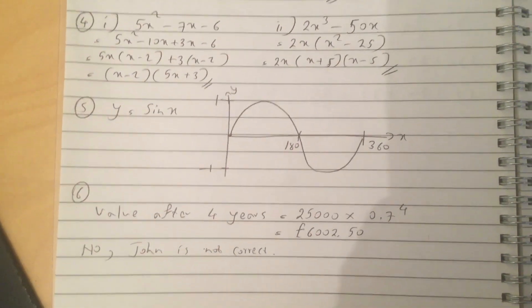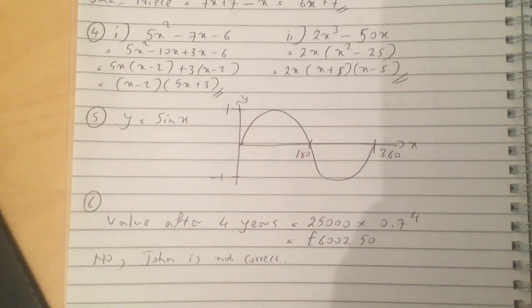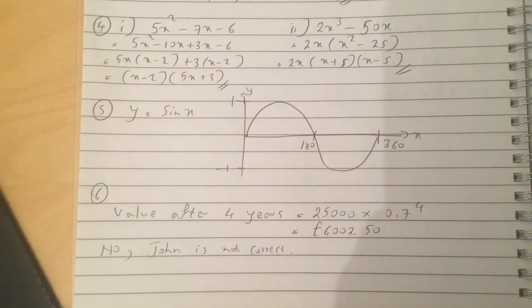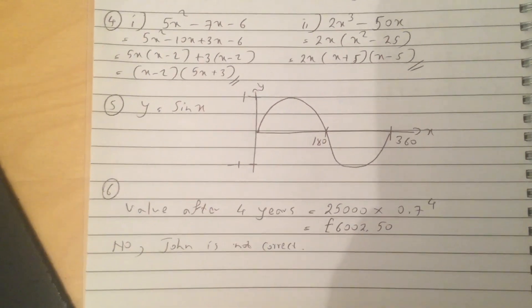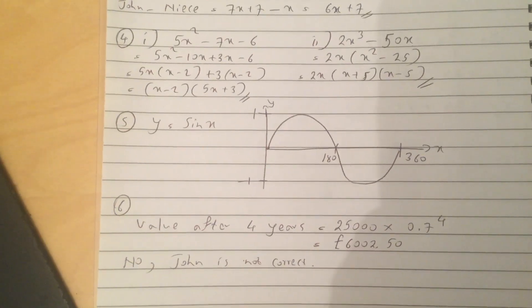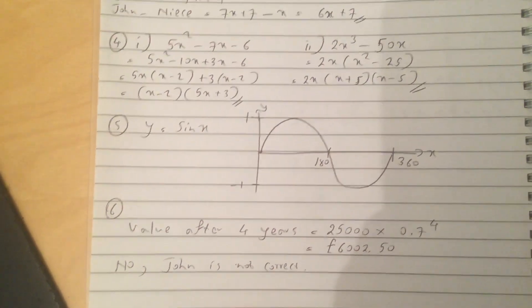Question 5, so you just simply sketch the sine graph. One cycle is 0 to 360, and it goes up to 1 and minus 1 in the maximum and minimum points.